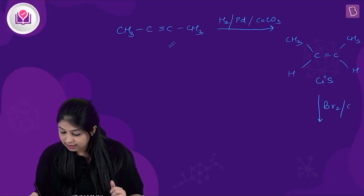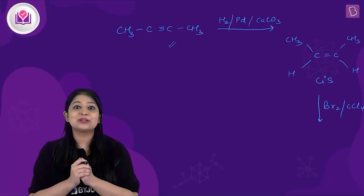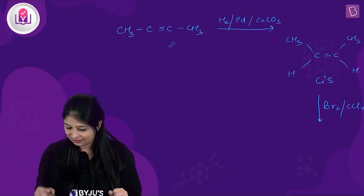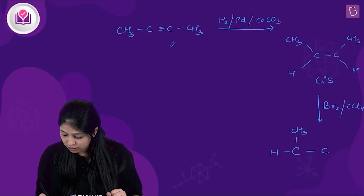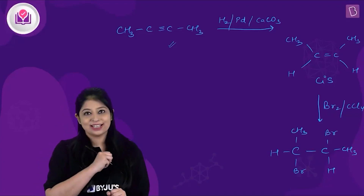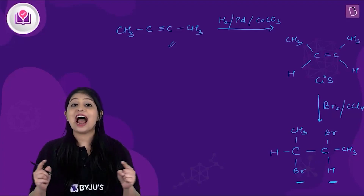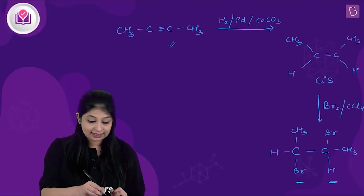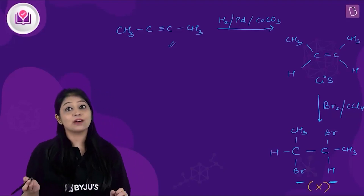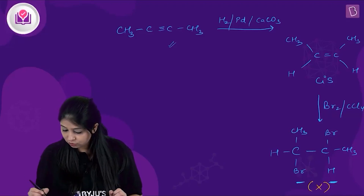In the second reaction, we add Br₂ in the presence of CCl₄ (carbon tetrachloride). Both bromine atoms get added to the double bond and we get a vicinal dihalide. The product has the structure: C–C with CH₃, H, and Br on one carbon, and Br, CH₃, and H on the other. It is a vicinal dihalide because the two bromine atoms are on adjacent carbon atoms.